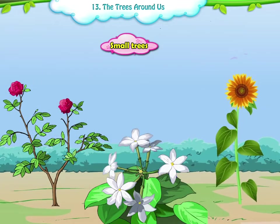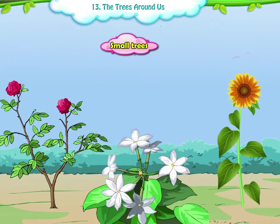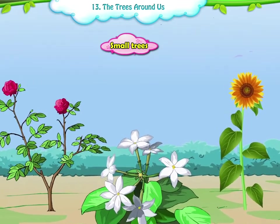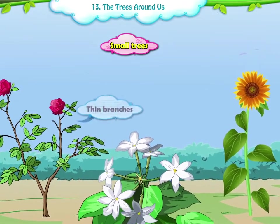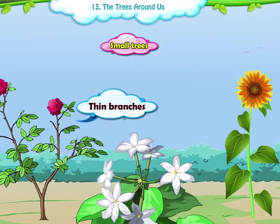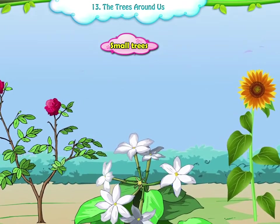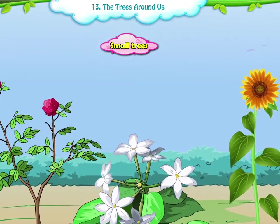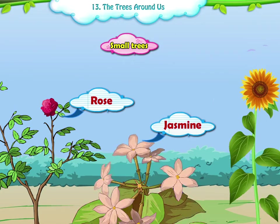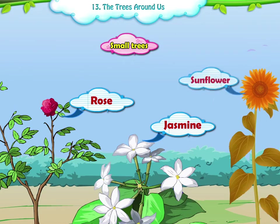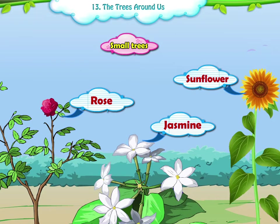2. Small Trees. Small trees do not grow much in height. They have thin branches. Examples: rose, jasmine, sunflower.